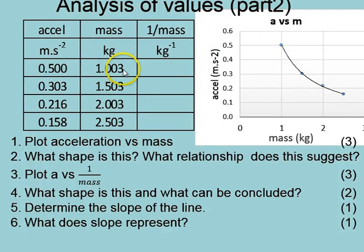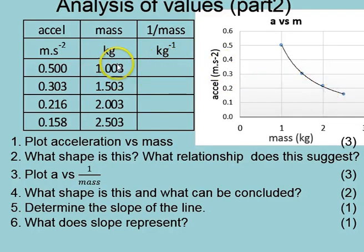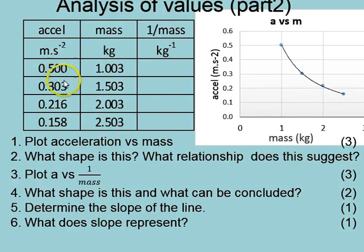Another point to note is where does this 1,003 come from? Well, the trolley was 903 grams and the hanging mass piece was another 100, giving a total of 1,003. But on this scale, by the time you've plotted it, we find that the last 0.003 is an insignificant figure — that 3 grams is insignificant when looking at the total mass. So effectively we are plotting these acceleration values when the total mass was 1, 1.5, 2 and 2.5 kilograms.